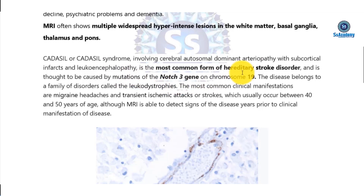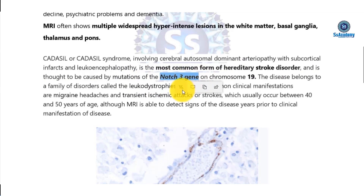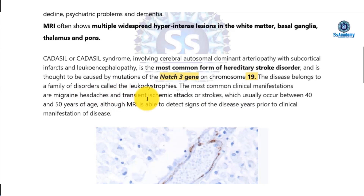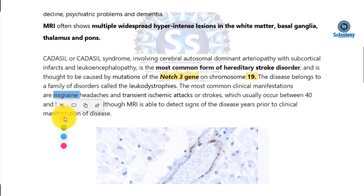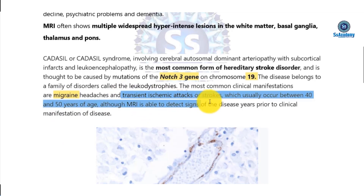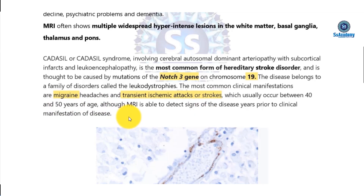CADASIL is the most common hereditary cause of stroke and vascular dementia. Clinical manifestations include migraine headaches and transient ischemic attacks or strokes, which usually present between 40 to 50 years of age. MRI is able to detect signs of the disease years prior to the clinical manifestation.